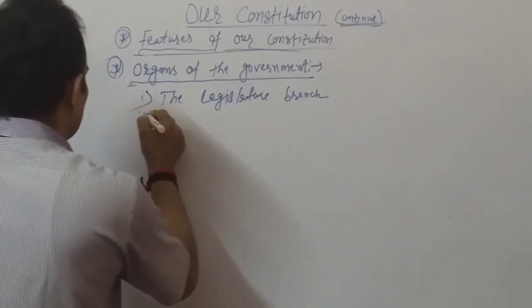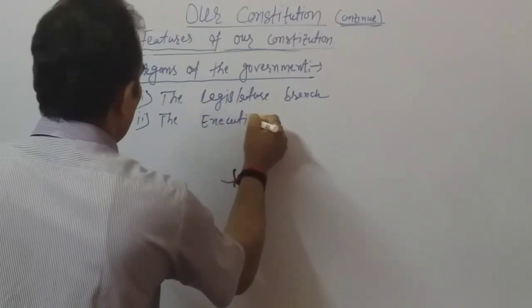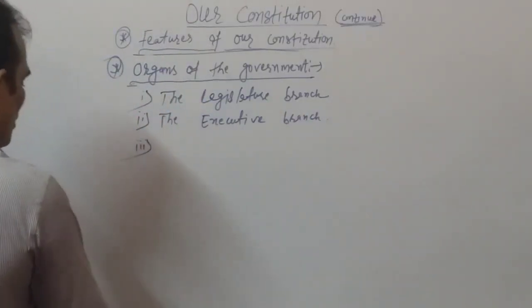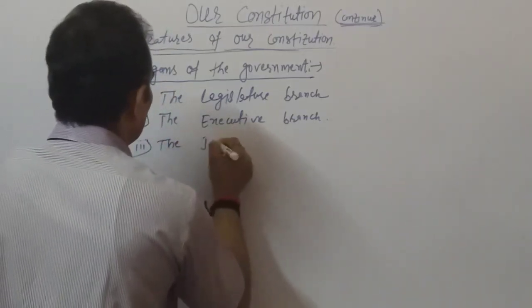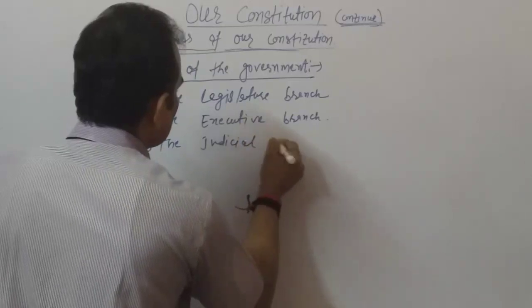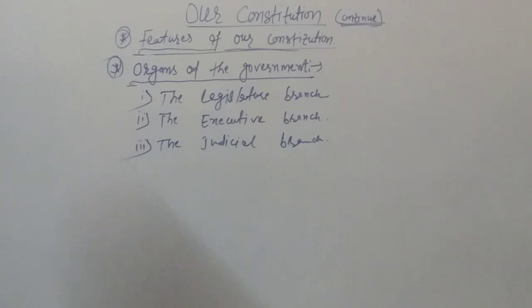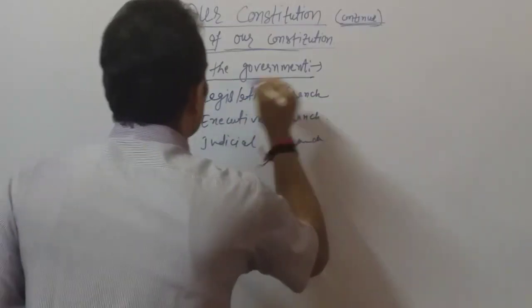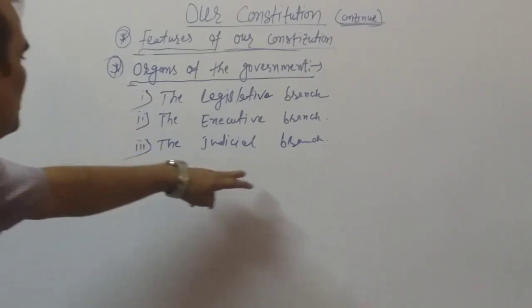The second is the executive branch, and the third is the judicial branch. These three branches are all defined and dependent on the constitution. The first is the legislative branch, the second is the executive branch, and the third is the judicial branch.